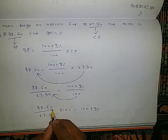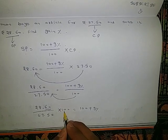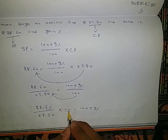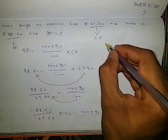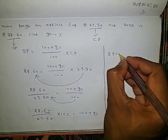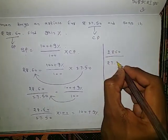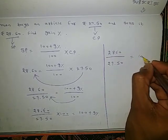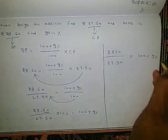After decimal, two digits are there. Here we are multiplying with 100, which has two zeros, so this decimal point will be removed. So we will get 2860 by 27.50 equals 100 plus gain percentage.